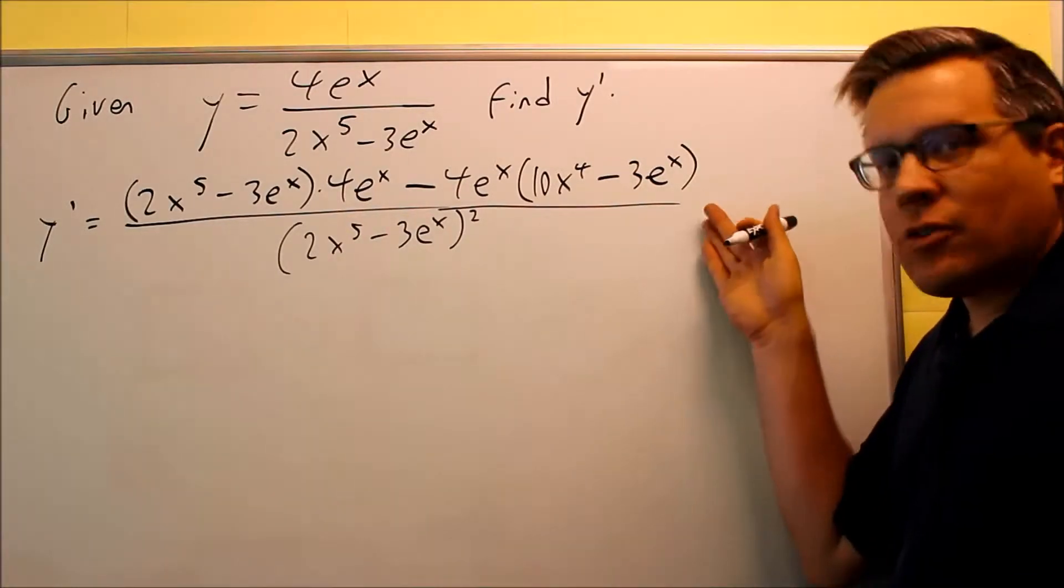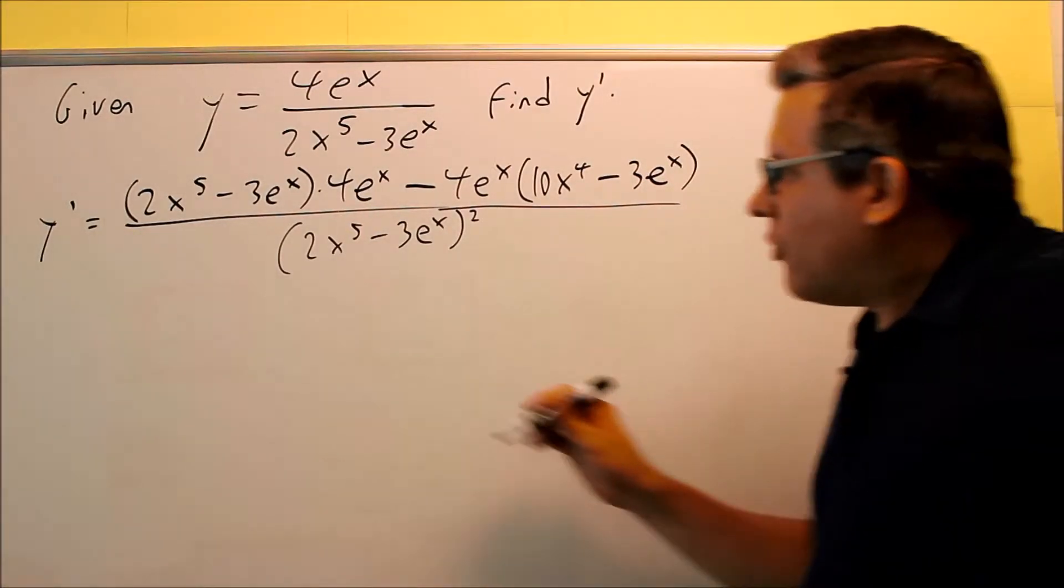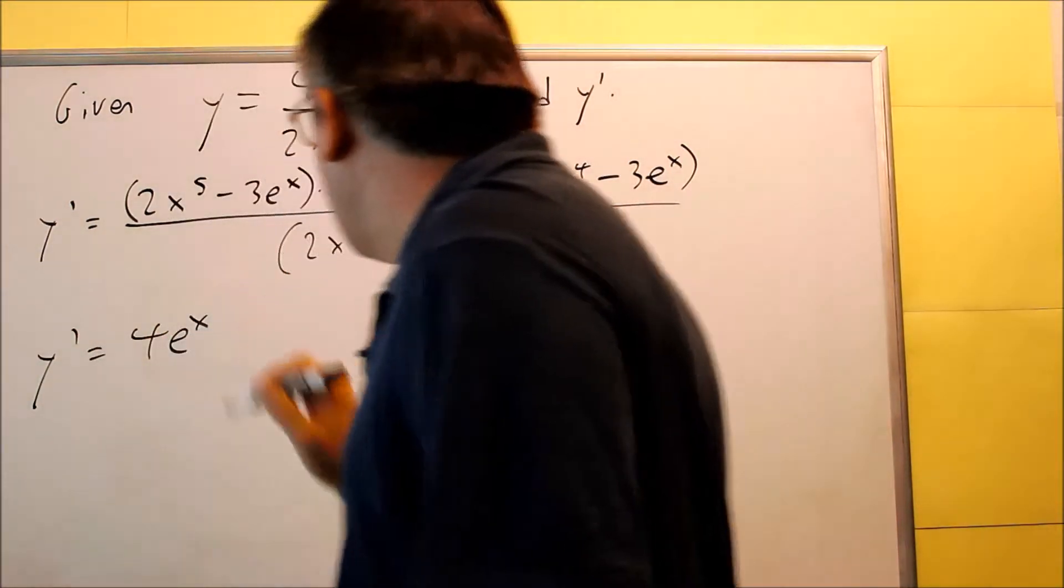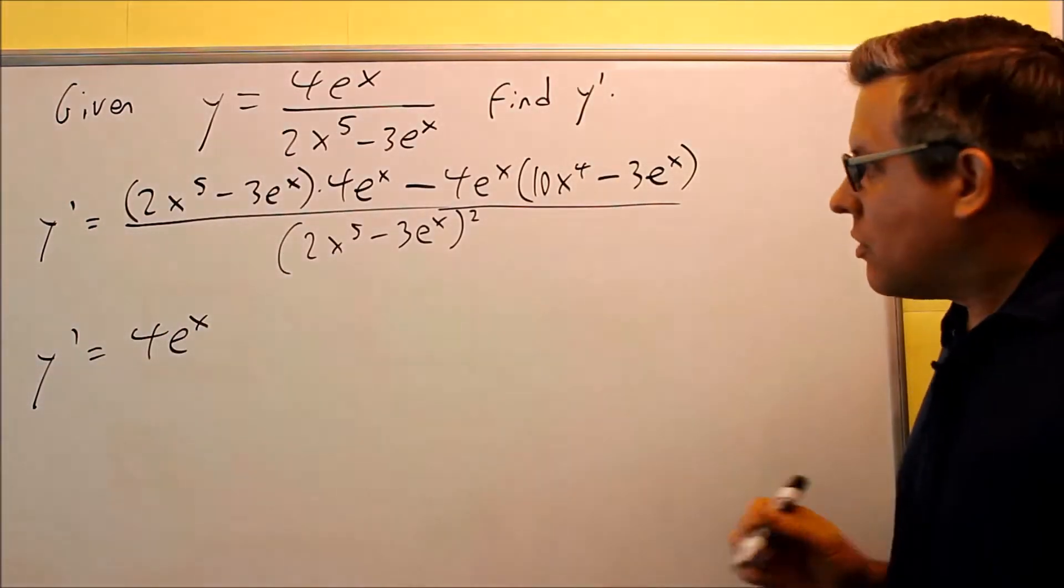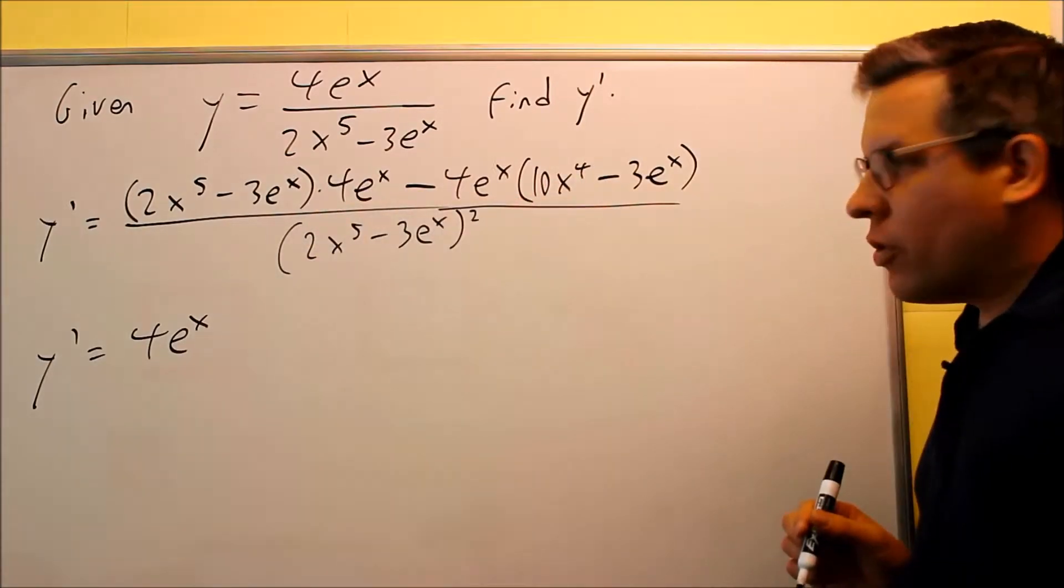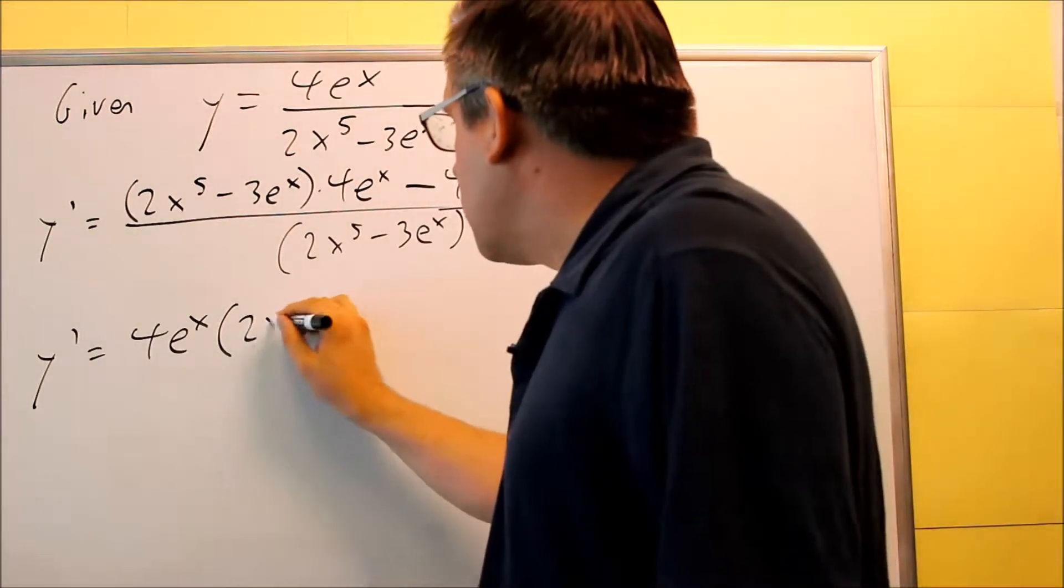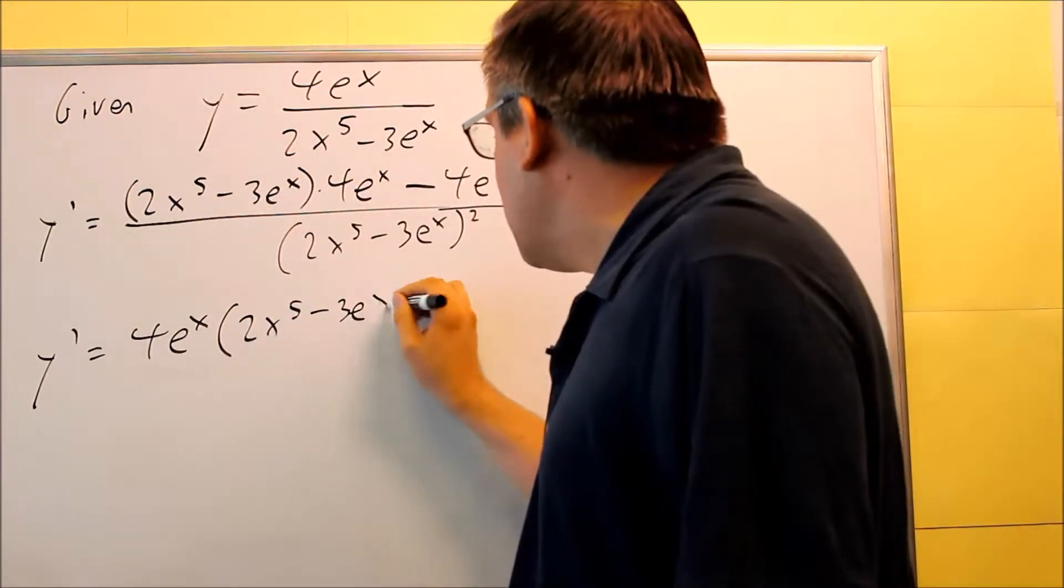Now let's do some factoring. So factoring for this, I can first pull out the common factor 4e to the x. That's common in both of these, so we'll first start with that. What we're left with is 2x to the fifth minus 3e to the x.